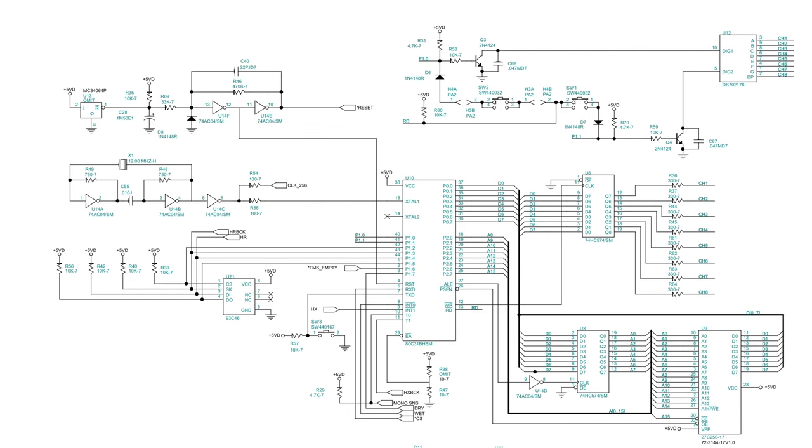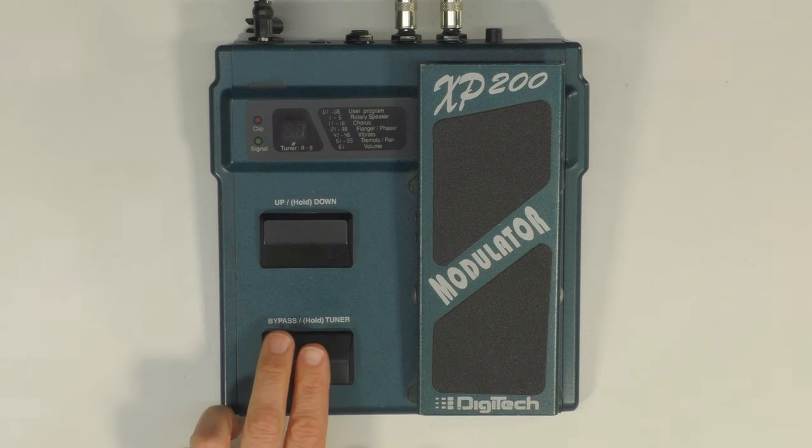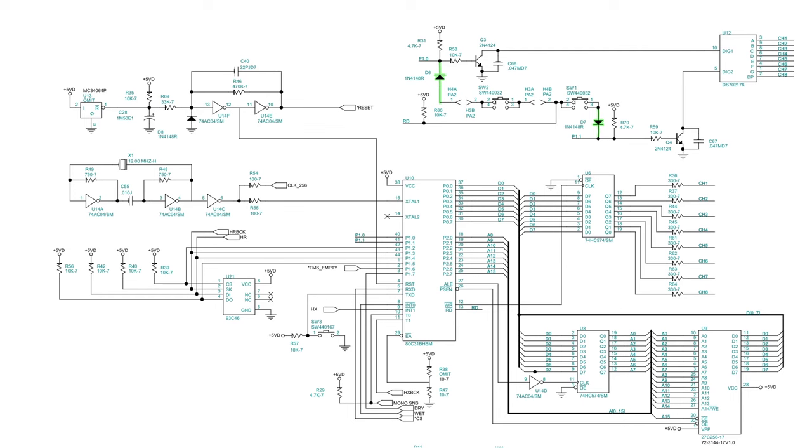In addition to selecting the LED digit to light up, P1.0 and P1.1 also provide a way to read switches SW1 and SW2, the two foot switches on the front of the pedal. There are diodes between the switches and the LED cathode transistors, which prevent the switches from interfering with the LED refresh process. When one of the switches is closed, the respective P1.0 or P1.1 signal passes through the read signal, pulling it low if P1.0 or P1.1 is low at the time.